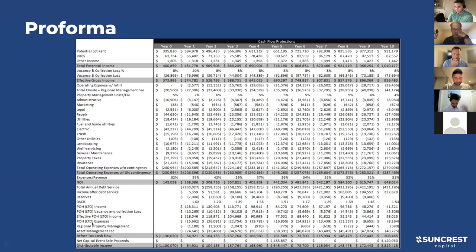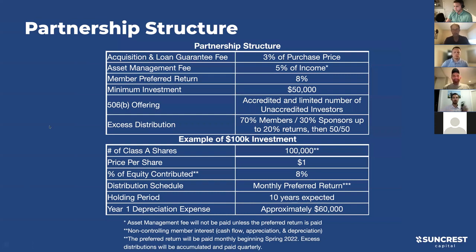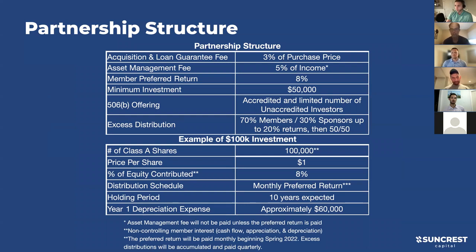After calculating NOI, you'll see debt coverage and then lease-to-own expenses and income baked down into the net distributable cash flow at the bottom. For partnership structure, this is relatively similar to our Iowa structure with a couple of differences. This is a 506(b) offering, meaning we can have up to 35 unaccredited investors as well as an unlimited number of accredited investors. Returns are structured at 70% of excess returns to members, 30% to sponsors, and then 50/50 above the 20% IRR.